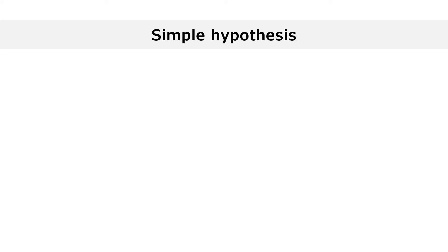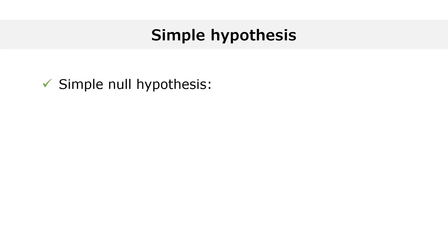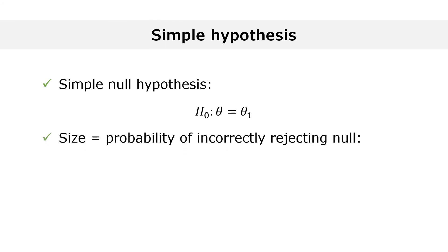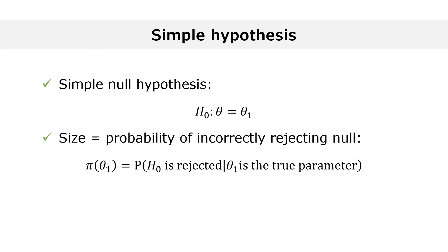Let us start from the case of the simple null hypothesis that the true parameter is equal to theta 1. In this case, the size of the test is simply the probability of rejecting the null, which is given by the power function pi of theta 1.